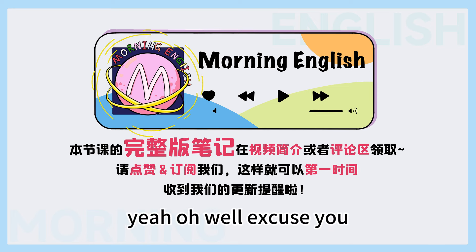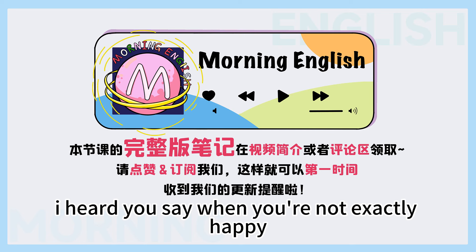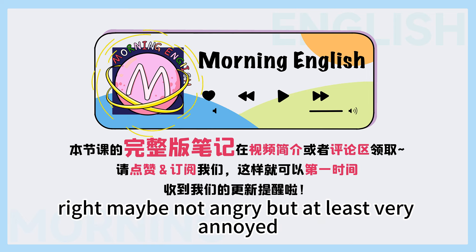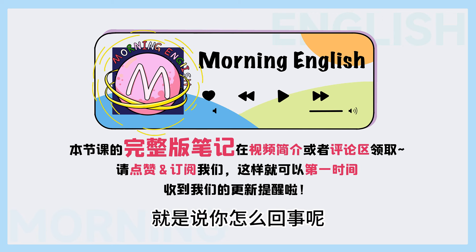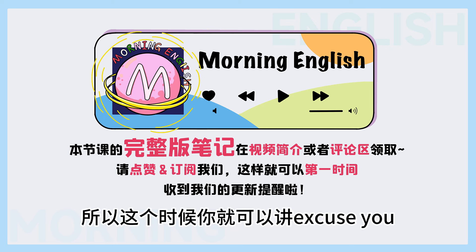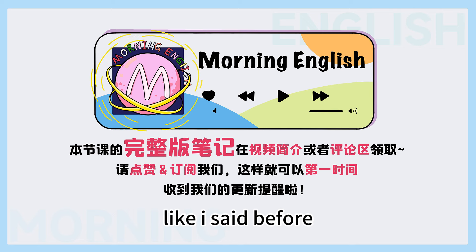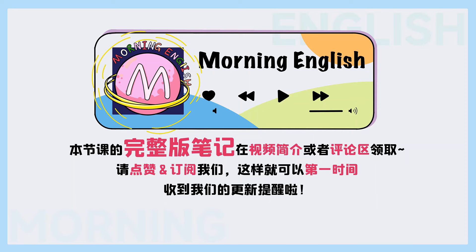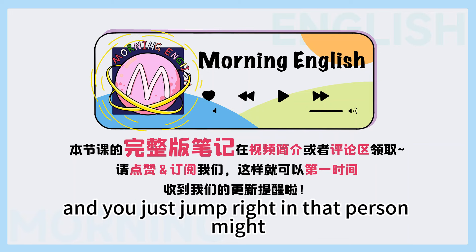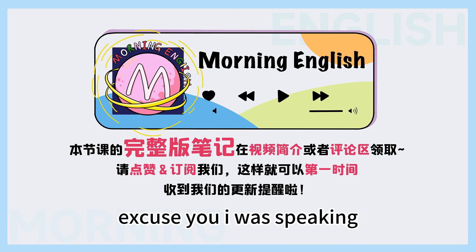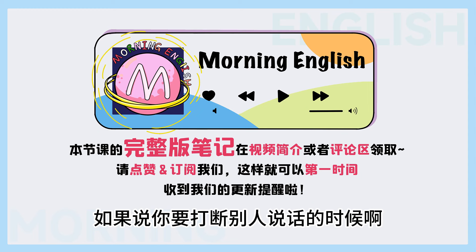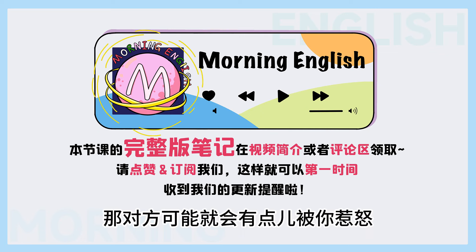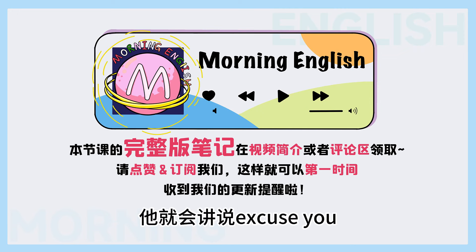那我们一开始讲那个'excuse you'又是什么意思呢? Well, 'excuse you' is something you say when you're not exactly happy — maybe not angry, but at least very annoyed. 所以它翻译成中文,就是说'你怎么回事呢,你冒犯到我了。' So for example, if you interrupt someone when they are speaking, you would say, 'I'm sorry, excuse me, but I need to ask you a question.' But if you just jump right in without saying anything, that person might get annoyed and say, 'Oh, excuse you — I was speaking!' 所以呢,这个短语就是用在你觉得被冒犯或者说有点恼怒的时候。